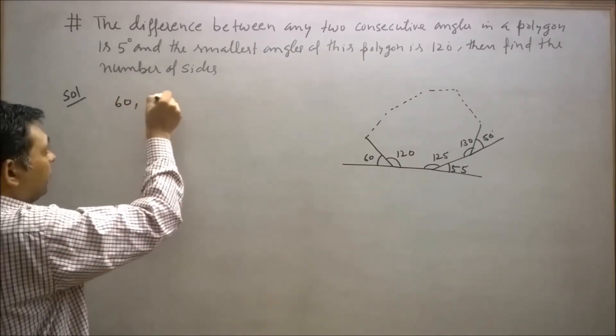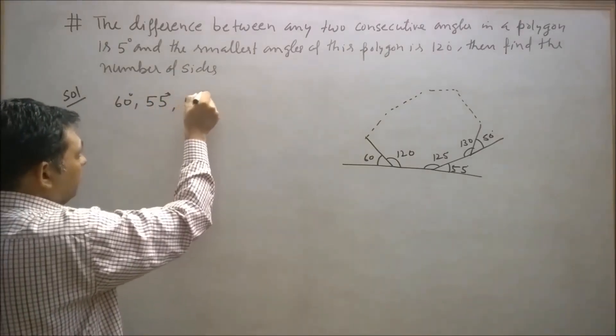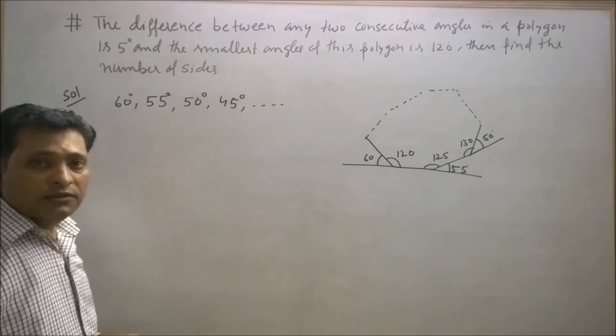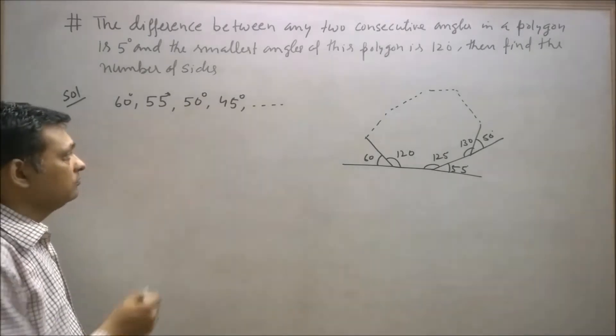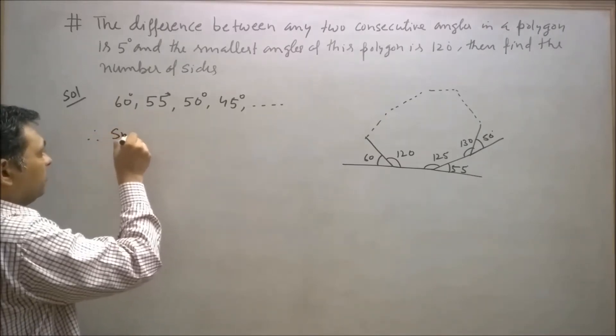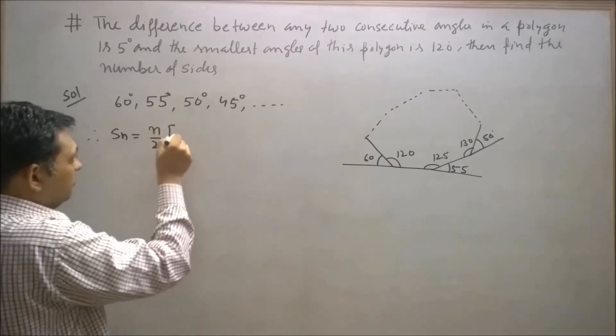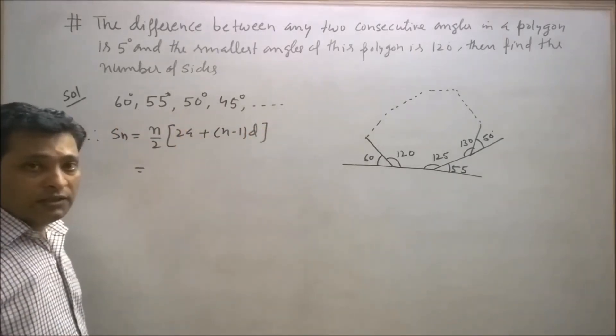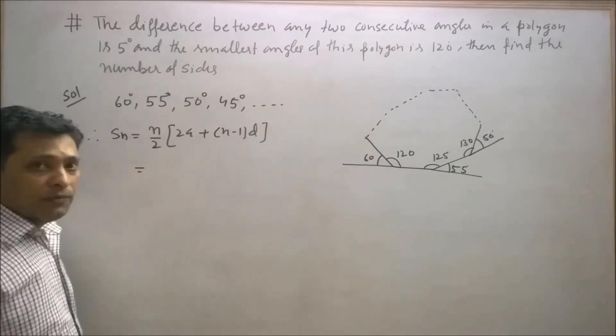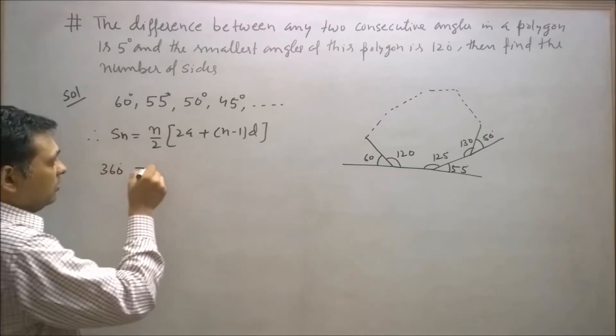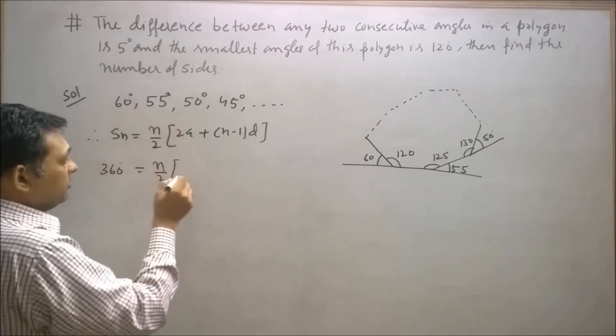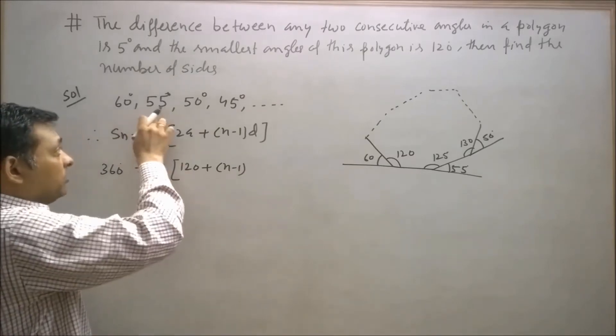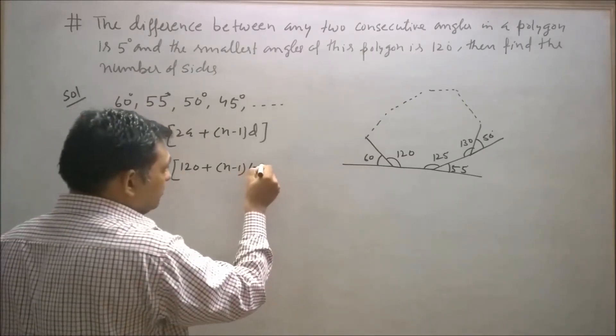60, 55, then 50 degrees, 45, and so on. The sum of these all exterior angles is 360 degrees in a polygon. So the sum of n terms Sn = (n/2)[2a + (n-1)d]. Double of first term is 120, and the common difference d is -5.